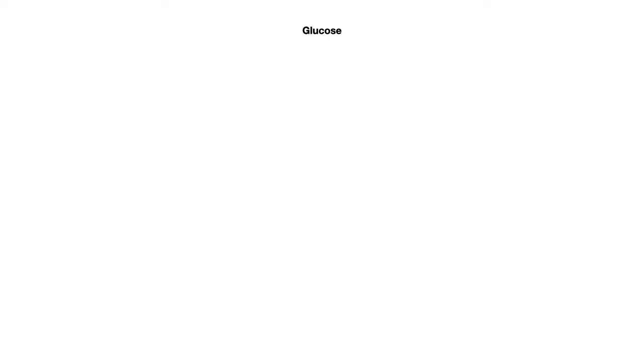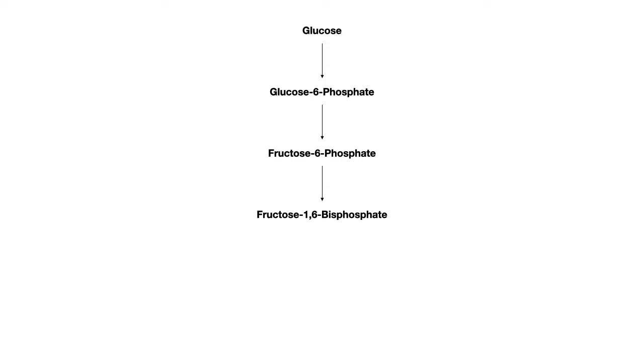You start with glucose. When a person eats a cheeseburger, a french fry, or drinks a milkshake, they have carbohydrates composed usually of glucose. If it's not glucose, the other types of sugars will get turned into glucose so that glycolysis can utilize it. The first step is glucose gets turned into glucose-6-phosphate, then fructose-6-phosphate, then fructose-1,6-bisphosphate. After multiple more reactions, you end up with phosphoenolpyruvate, which gets turned into pyruvate. Going from glucose down to pyruvate is the entire glycolysis pathway.